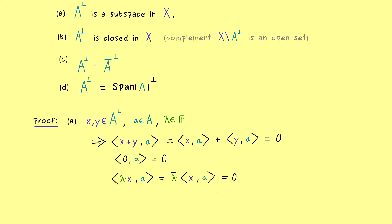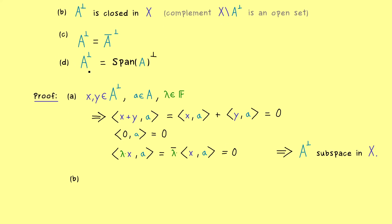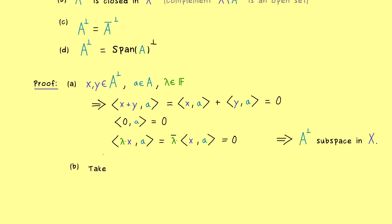As you can see, the only thing we needed in the proof is that in the definition of the orthogonal complement we have the inner product — and that is also all we need for showing the other parts. For part (b) we want to show closedness, and this can be done by considering sequences. We take a sequence xₙ completely inside our orthogonal complement. The sequence should be convergent in X, but the limit could lie outside A-perp.